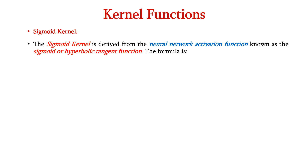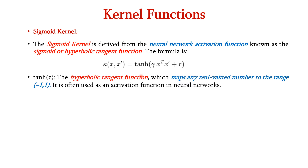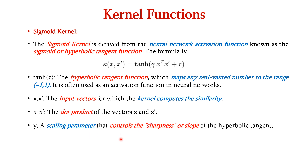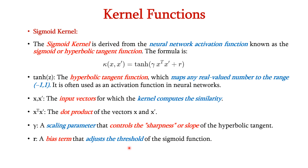Let us see about the sigmoid kernel. The sigmoid kernel is derived from the neural network activation function known as the sigmoid or hyperbolic tangent function. The formula is K of X comma X dash is equal to tanh of gamma into X transpose X dash plus R. The equation is similar to the polynomial kernel; the only difference is that we apply the tangent function instead of a polynomial. The tanh function maps any real-valued number to the range (-1, 1) and is often used as an activation function in neural networks. Gamma is the scaling parameter controlling the sharpness of the hyperbolic tangent, and R is the bias term adjusting the threshold of the sigmoid function.